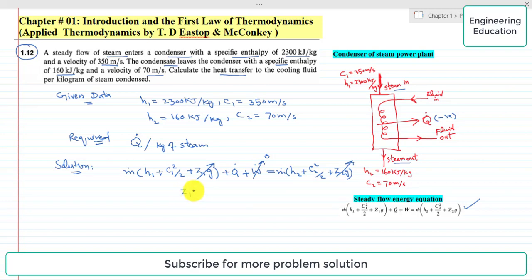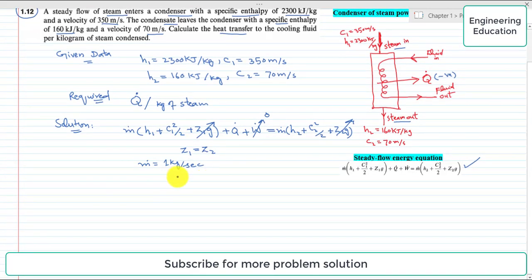When we put z₁ equal to z₂, the effect of this term will be cancelled. Also, we are required to find the heat transfer per kilogram of steam. The ṁ value is actually 1 kilogram per second. Rearranging this steady flow equation, we are interested to find Q̇ per kilogram of steam.